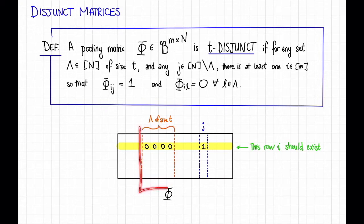So for any such λ, and also for any j, any column j that's not in λ, there should be at least one row, at least one i in the numbers 1 through m, this i here, so that if I look at just that row, there is a 1 in the ijth position and all 0s in the ilth position for all l in λ. And if a matrix satisfies this for any λ of size t and for any j not in λ, we say that it is t-disjunct.